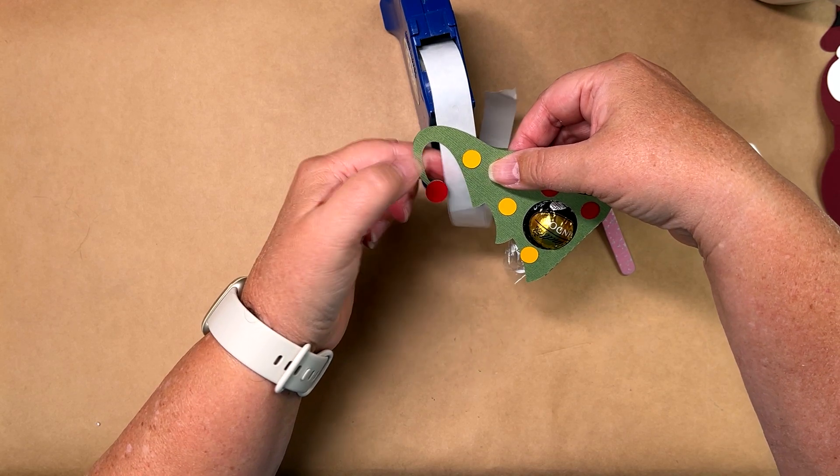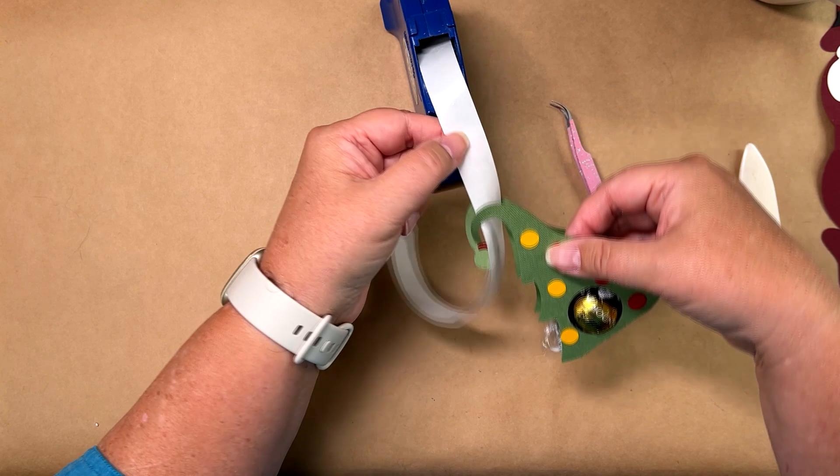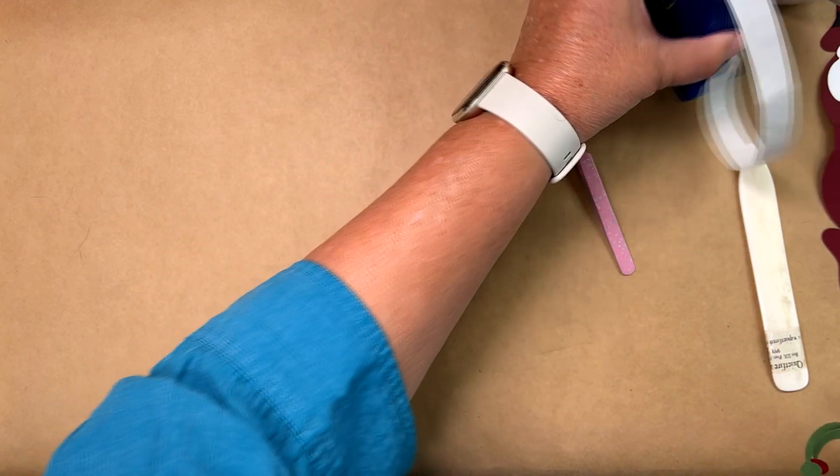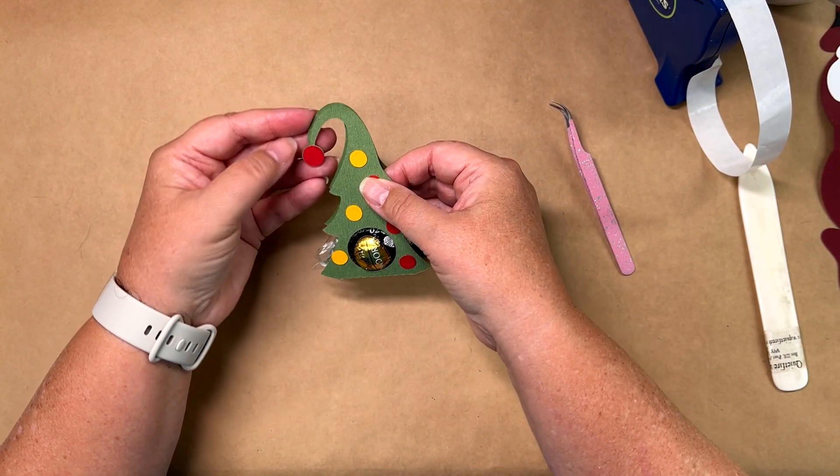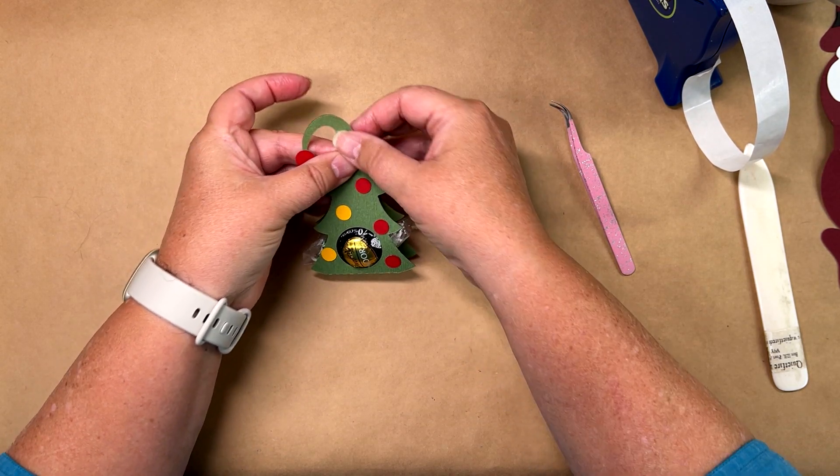Because if you use glue, the person who gets it will tear the whole thing apart just to get the candy out. Which might be fine, but I don't know. I'd keep it. And there you go. That's how you do it.